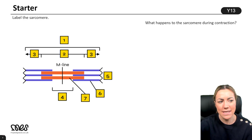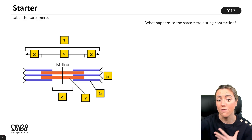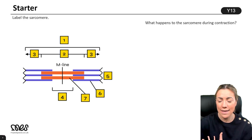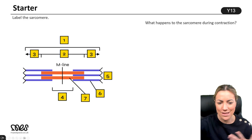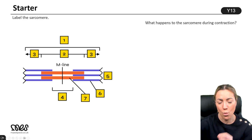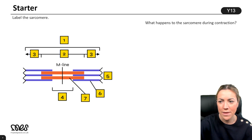We've got a little activity to begin with, just as a reminder of the structure of a sarcomere, so we can label all of the different bands and zones and check that we're happy with that.